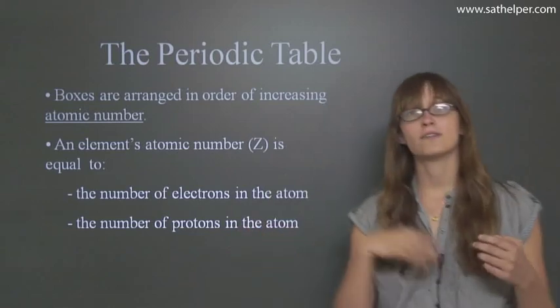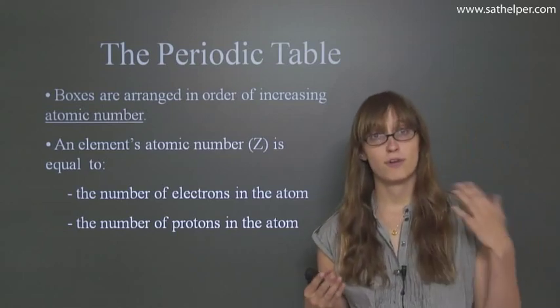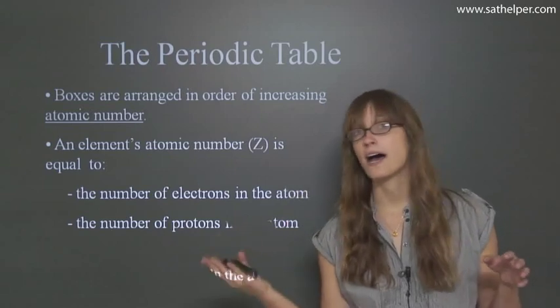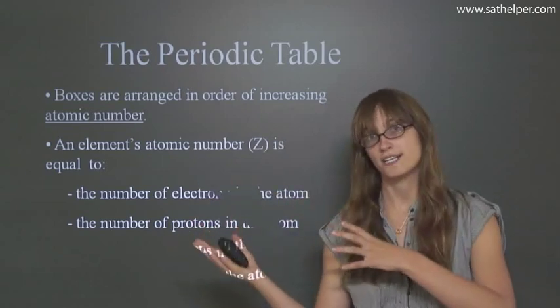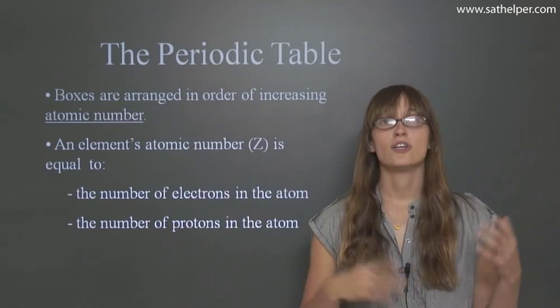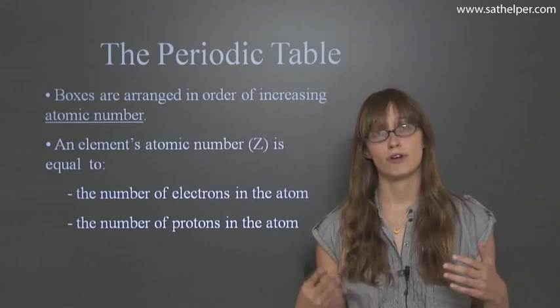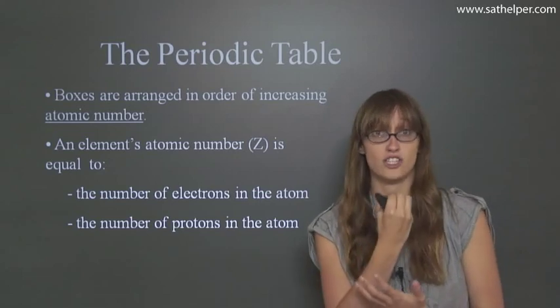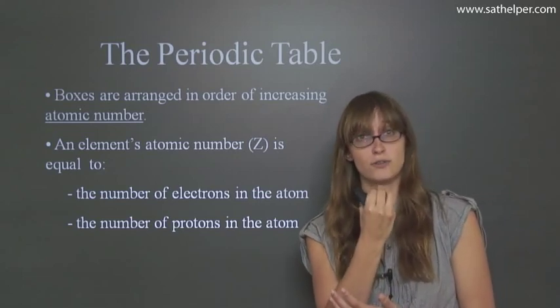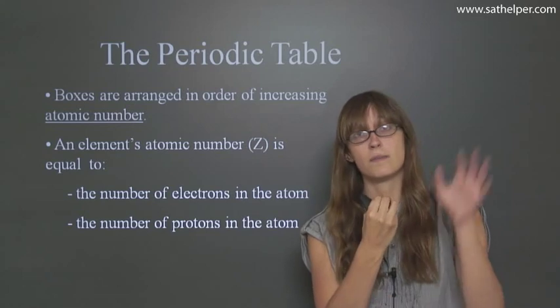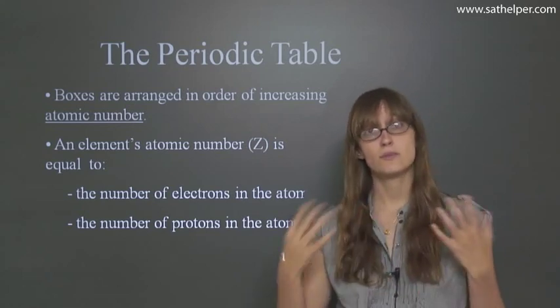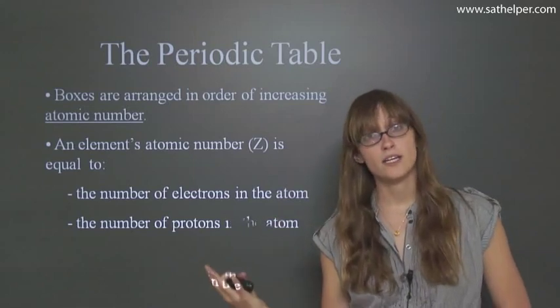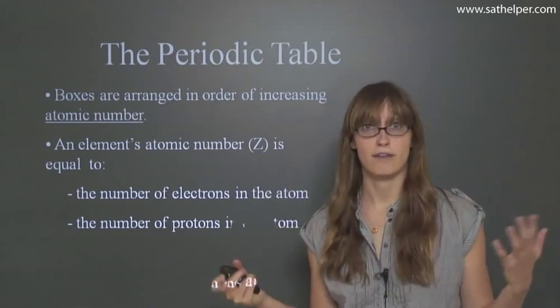So why are the number of electrons always equal to the number of protons? Well, if you think about it, if you have an element that's neutral, it's not an ion, it doesn't have a positive charge on it, it doesn't have a negative charge on it, you have to have the same number of protons on the inside and electrons on the outside to balance each other out. So the amount of positive charge in the nucleus is always going to equal the amount of negative charge outside. And this is what makes the atom stable. So the atomic number is going to tell you how many electrons and how many protons you have in an atom.